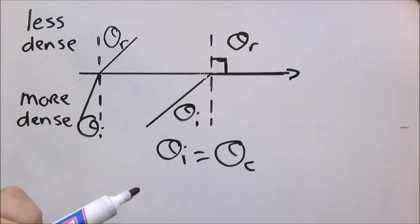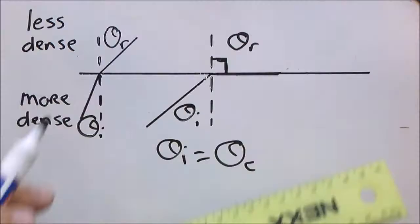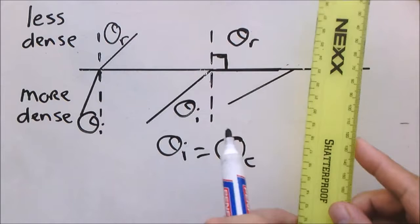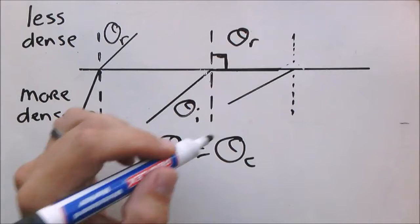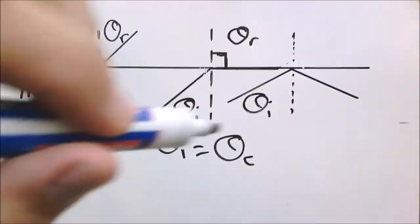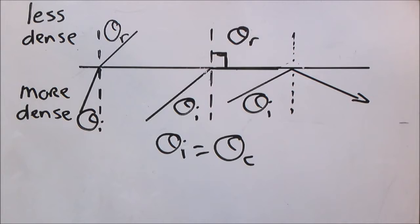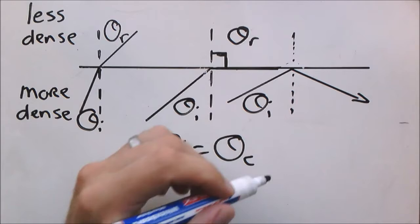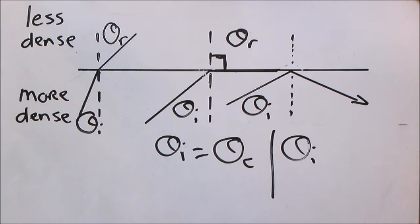The second concept I want to introduce is total internal reflection. At an even greater incident angle, something called total internal reflection takes place. This light ray does not exit the more dense medium — it stays within the medium. Total internal reflection occurs when the incident angle is greater than the critical angle.